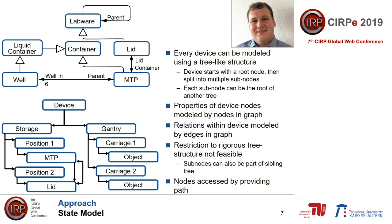The necessity to model an open MTP while keeping the relation between the lid and the corresponding plate is one reason why a rigorous tree structure is not feasible. Relations can span between siblings within a graph. The relations between physical objects are modeled by relations between nodes in a graph, while the properties of a physical object are modeled by the properties of a node. A node in the graph can be accessed by starting at the root node and traversing edges in a specified order, represented as a list of elements similar to a file path in a computer system.